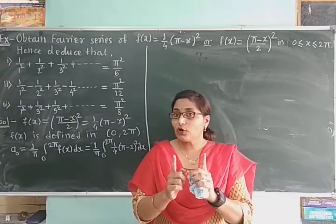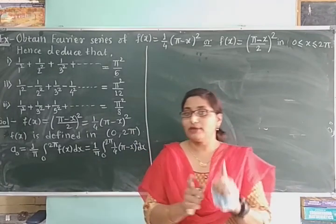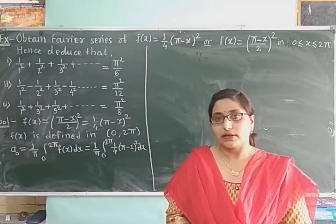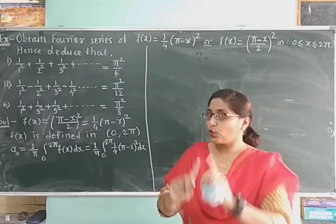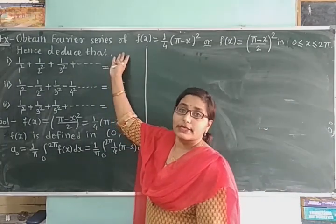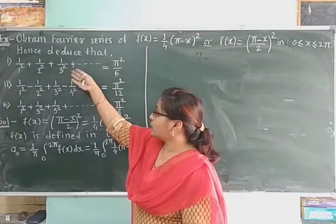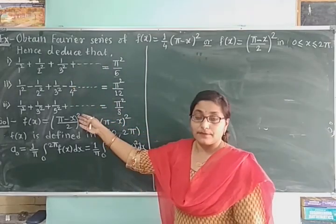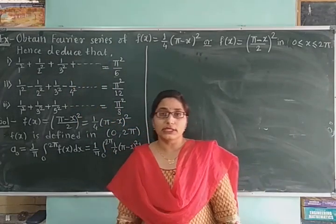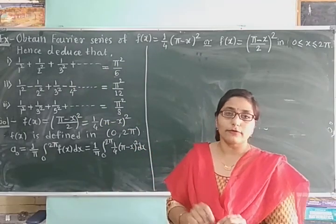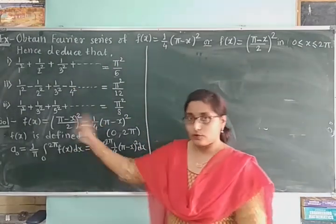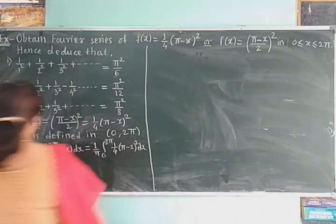Do we check even or odd here? No. We check even or odd only in the interval minus L to L. So no need to check even or odd. Also, after getting the Fourier series, we are going to deduce three expressions — we put suitable values of x to obtain these deductions. So first of all we find the Fourier series.